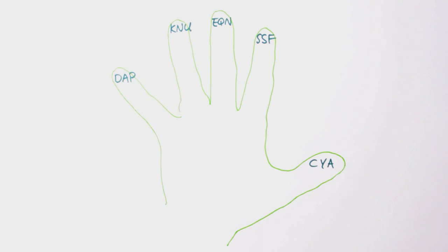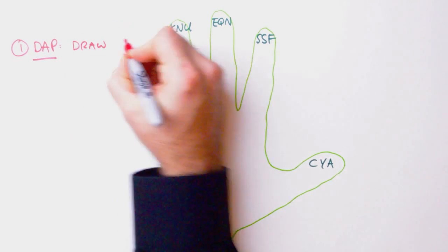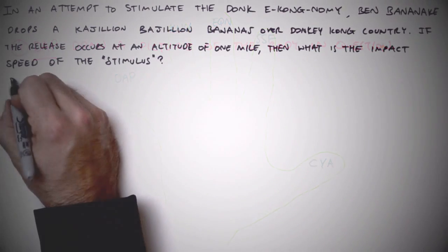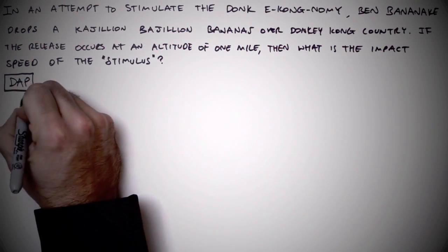Alright, first official step. Draw a picture of the body or bodies in question. Even if our artistic sensibilities have stagnated since second grade, we still need to draw a picture in order to visualize the situation.